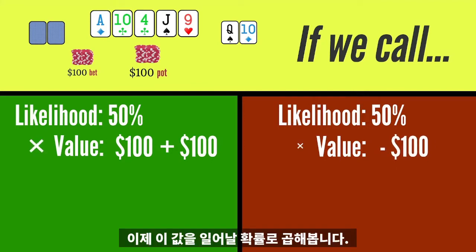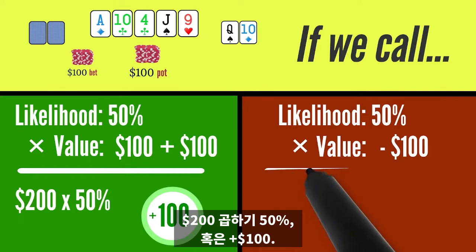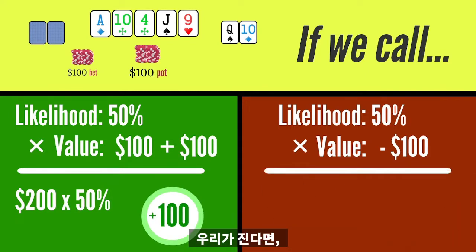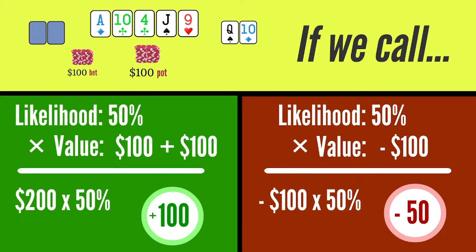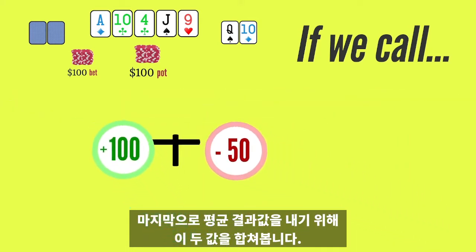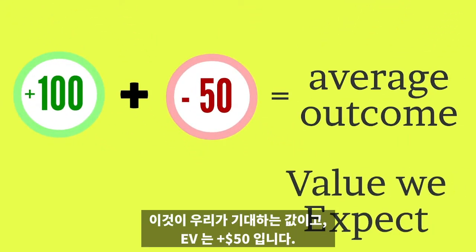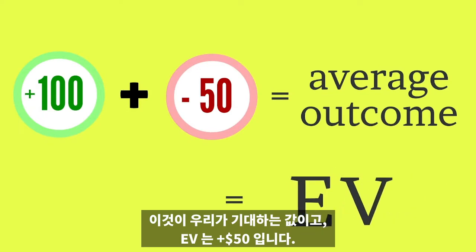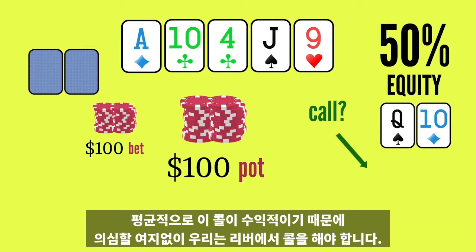Now multiply those values by their likelihood to occur. If we win, it's $200 50% of the time, or plus $100. If we lose, it's $100 50% of the time, or minus $50. Finally, add the two together to create the average outcome — this is the value we expect, and we get an EV of plus $50. Clearly we should make this call on the river, as it's profitable on average.